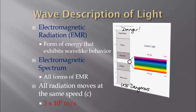No matter what type of radiation we are looking at, it all moves at the same speed, and we give that the letter C. This is the speed of light. It is a constant, and the constant is 3 times 10 to the 8th meters per second. This is a number you will want to commit to memory. Any type of radiation will move at this speed.